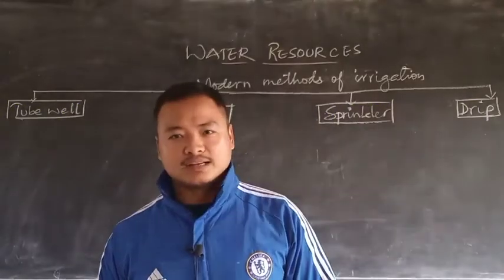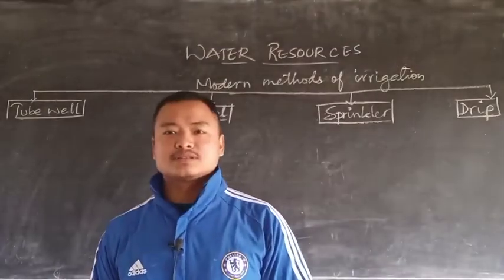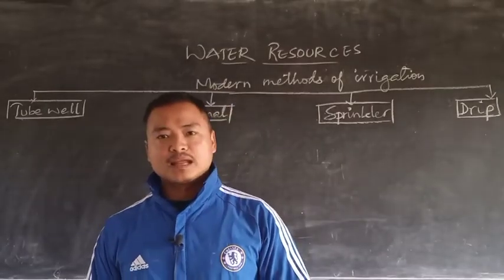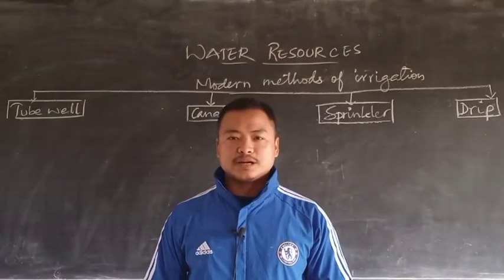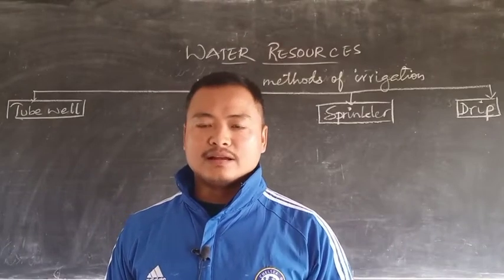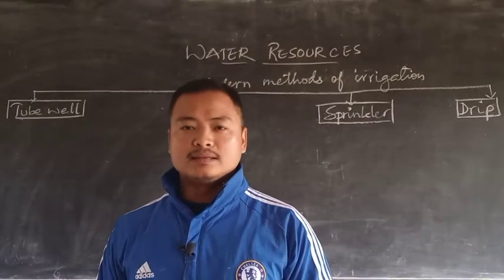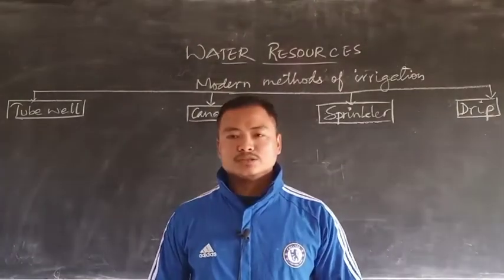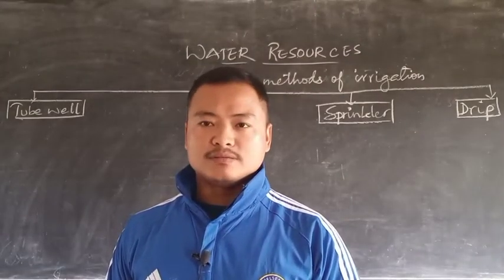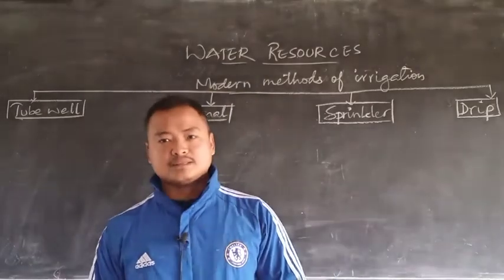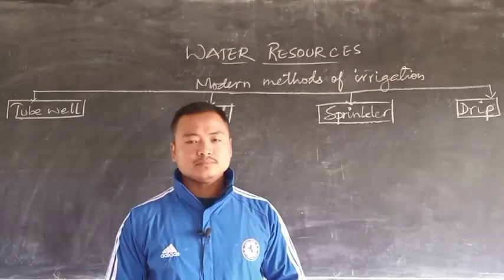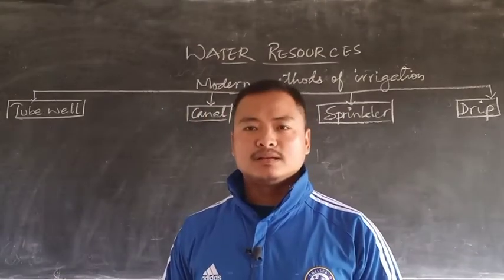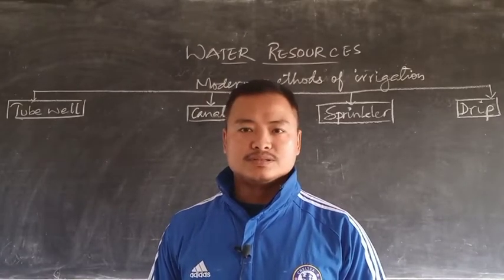Hello my dear students, welcome to your geography online class. Today in this class we will be discussing the chapter water resources and the topic modern methods of irrigation. Last class we discussed the traditional methods of irrigation and their advantages and disadvantages — well irrigation, tank irrigation, and inundation irrigation. Today we will be discussing the four different modern methods of irrigation and their advantages and disadvantages.